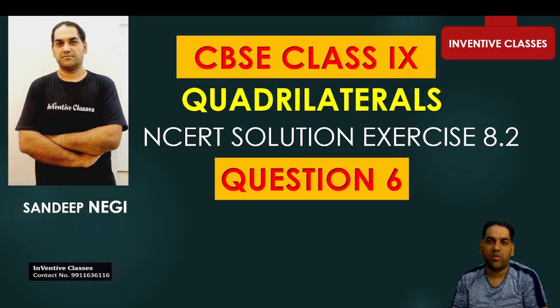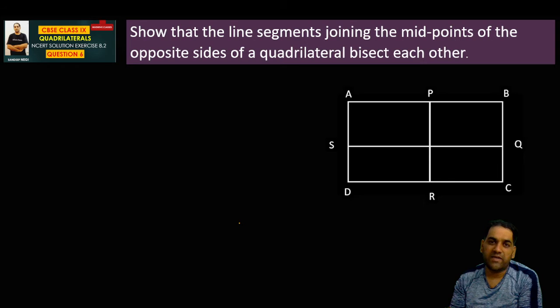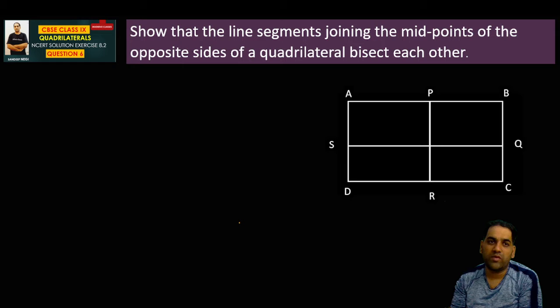So now we are discussing an important problem of chapter quadrilaterals, exercise 8.2, question number 6. It's a very important problem. A lot of times it has been asked in your CBSE examination. So let's see what we have to do in this question. The question is, you have to show that the line segment joining the midpoints of the opposite sides of a quadrilateral bisect each other.